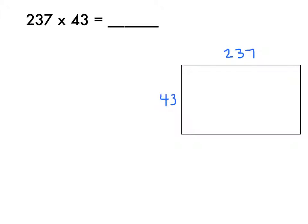Let's start with 237 times 43. The first thing I want to do is set up my problem vertically and make sure to line up my place value. You can see that I lined up the tens and the ones place under the tens and ones place in 237.